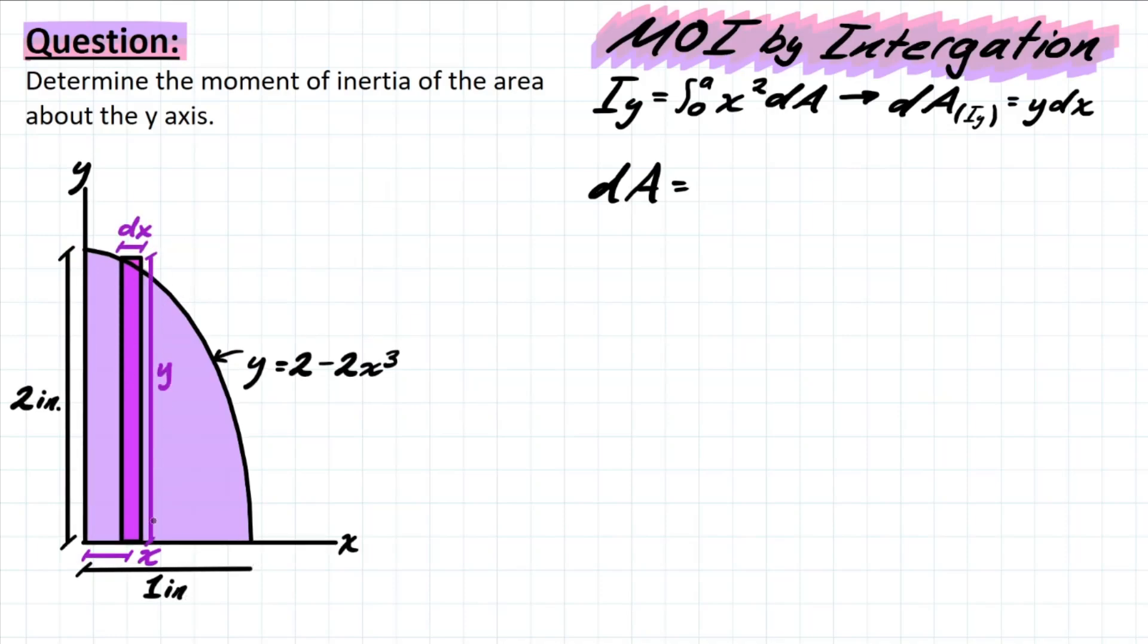Now that we understand that, we can actually go ahead and solve for what dA is to use it in this formula, because this is simply a rectangle and all we're working with is y times dx. So dA says y times dx. And we know what that y value is because it is given to us. It's always going to be equal to 2 minus 2x to the 3 times dx, which is our theoretical thickness for each of these segments.